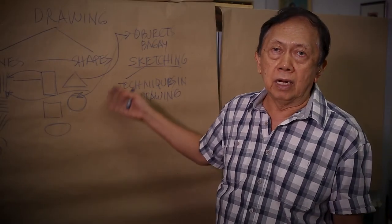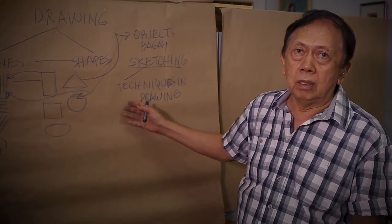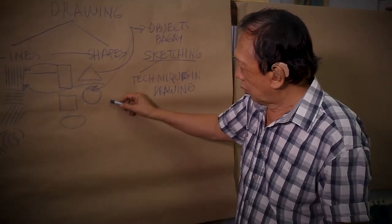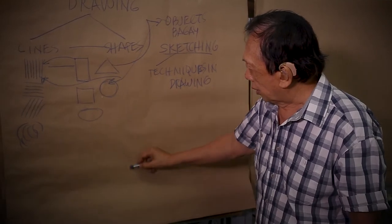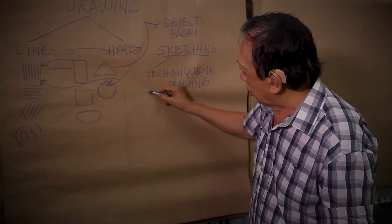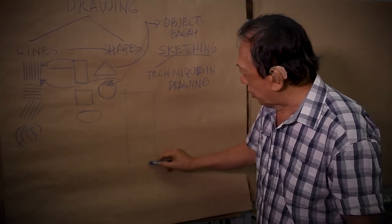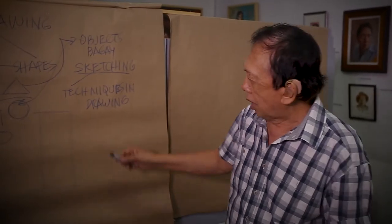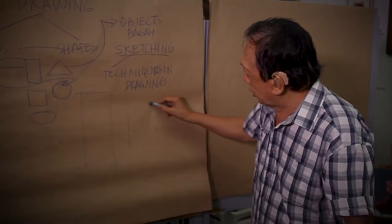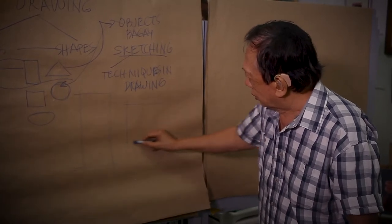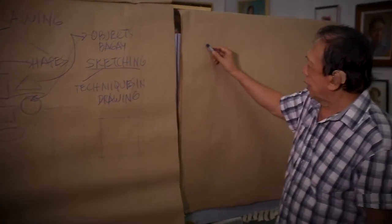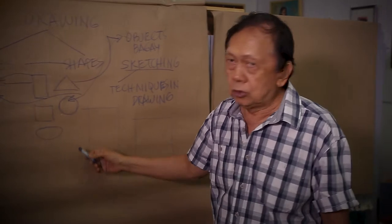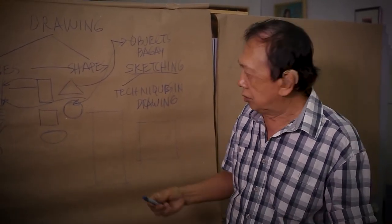Sketching - yan ang technique sa pag-drawing. Paano ba ang pag-sketch? Number one: i-dodrawing niyo muna yung shape ng bawat objects. Halimbawa, merong object na kita natin, ang shape niya rectangle - halimbawa, yung bote. Dodrawing niyo muna yung rectangular shape. Minsan meron tayong nakikita na mukha siyang square shape, minsan triangular shape. Yan ang unang step. Gagamit tayo muna ng maliwanag na maliwanag na linya - hindi muna didihinan.